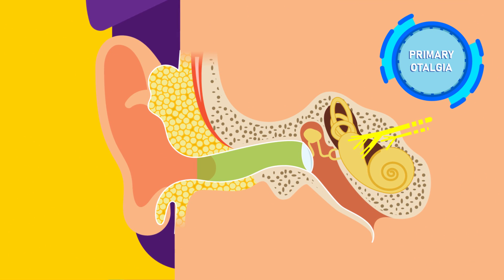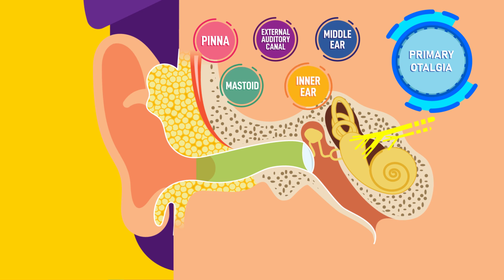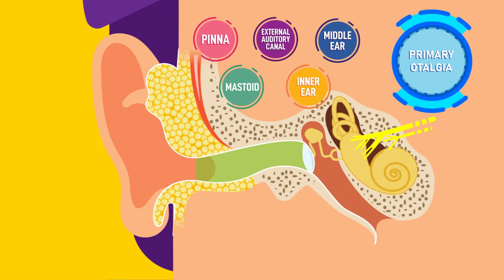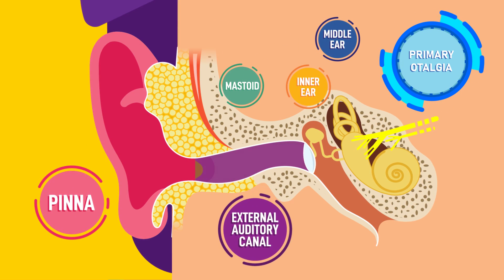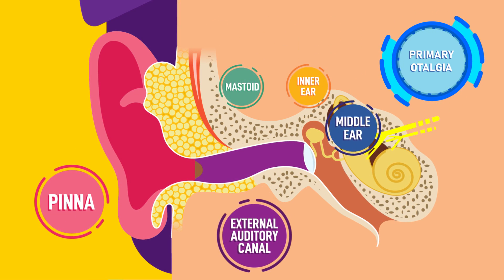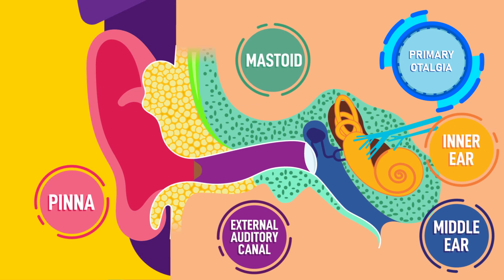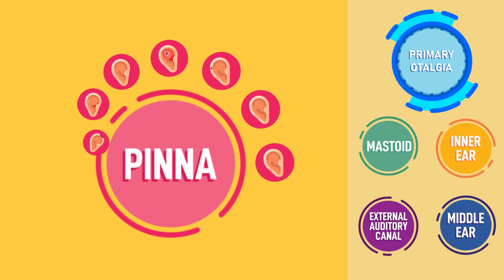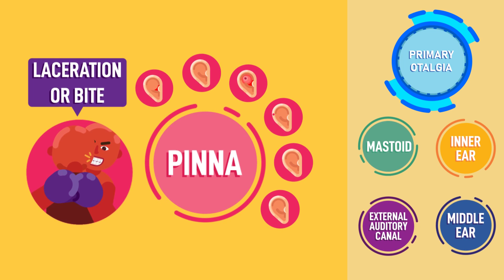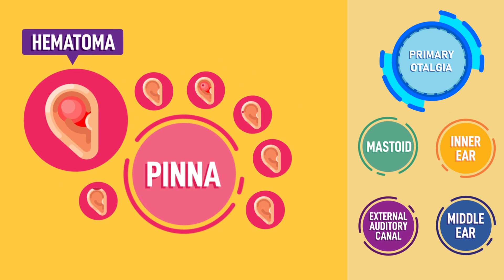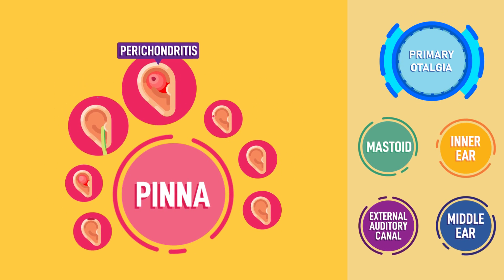The major causes of primary earache are divided by the five major parts of the ear: pinna, external auditory canal, middle ear, mastoid, and inner ear. In the pinna, causes of earache can include laceration or bite, hematoma, otitis externa, perichondritis, preauricular sinus, frostbite, or sunburn.